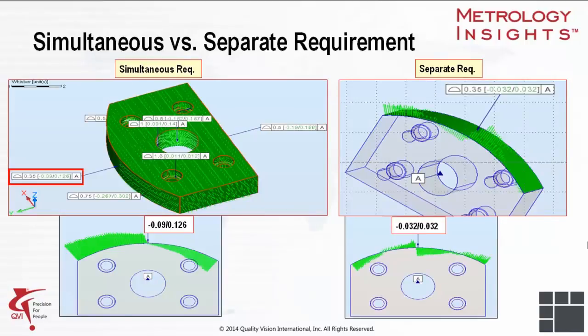Let's look at one final example to illustrate the difference between simultaneous and separate requirements. Here we see a part with profile tolerances applied to several features. Again, the deviations of the 0.35 profile to A are larger when evaluated simultaneously than when evaluated separately.